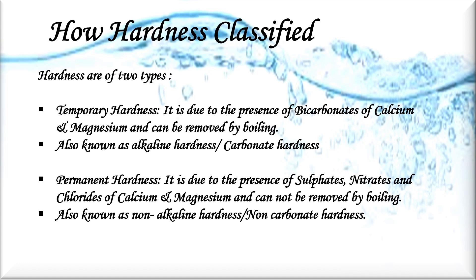Hardness is classified into two types. Number one: temporary hardness, which is due to the presence of bicarbonates of calcium and magnesium, and can be removed by boiling. It is also known as alkaline hardness or carbonate hardness. Number two: permanent hardness, which is due to the presence of sulfates, nitrates, and chlorides of calcium and magnesium, and cannot be removed by boiling. It is also known as non-alkaline hardness or non-carbonate hardness.